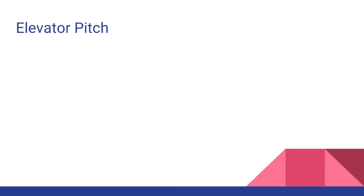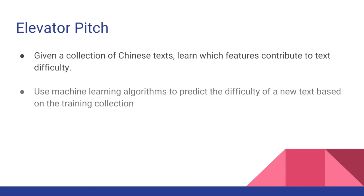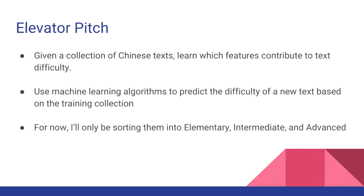So what's the goal of the project? In short, given a collection of Chinese texts of which we have a general idea of their difficulty level, we try to learn which features contribute to that difficulty. Then we're going to use machine learning algorithms to predict the difficulty of a new Chinese text based on the aforementioned training collection. Though more refined categories would be nicer, for this project I'm only going to sort them into three categories: elementary, intermediate, and advanced.